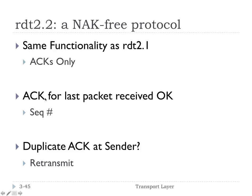RDT 2.2 is a slight improvement. It has the same functionality as 2.1 but doesn't use NAKs — it only uses acknowledgements. By including a sequence number in the acknowledgement (the last sequence number received), we can always send an ACK message with the last packet received. If a duplicate ACK is received by the sender — for example, it sends a packet and gets back an acknowledgement for the previous sequence number — that tells the sender the receiver got a corrupted packet and is asking for a retransmit. So by putting sequence numbers in the acknowledgements, we don't need negative acknowledgements.